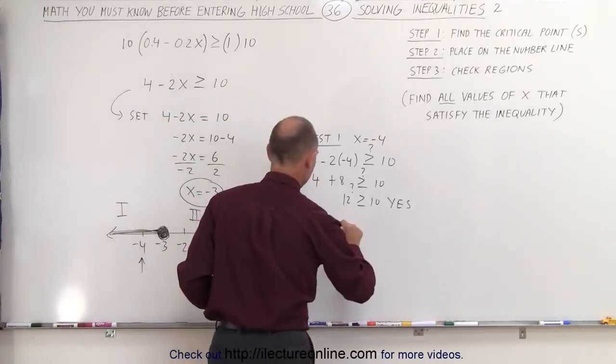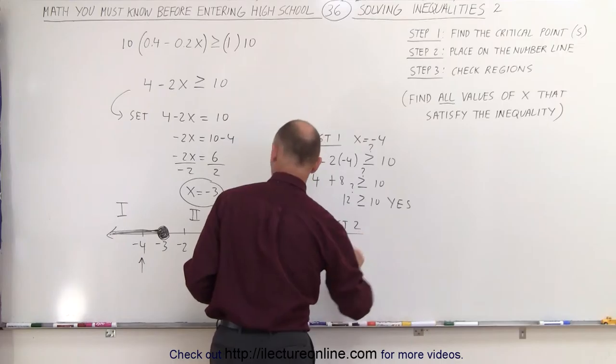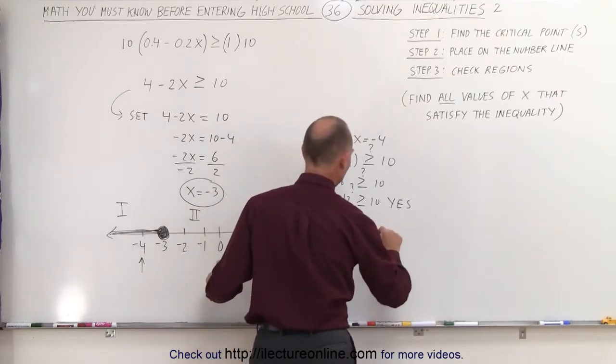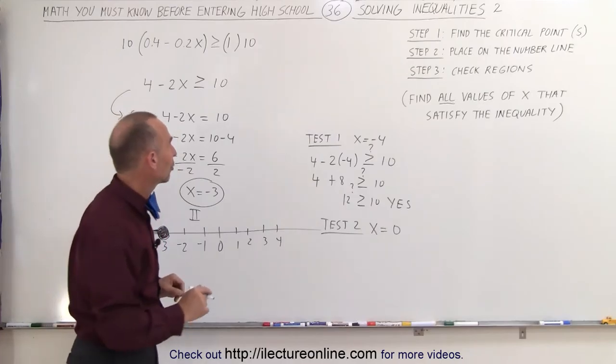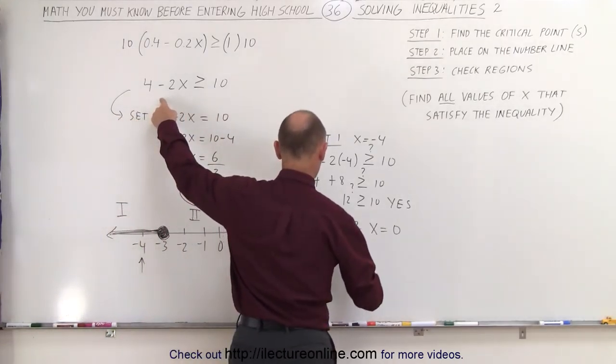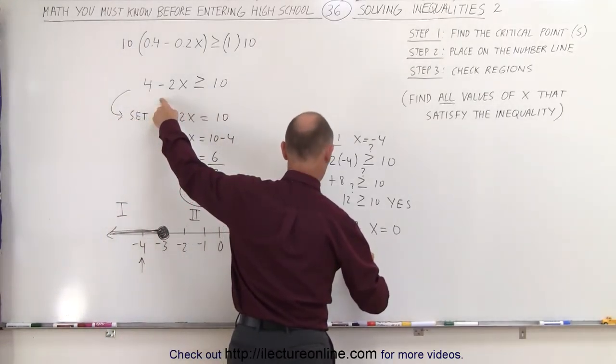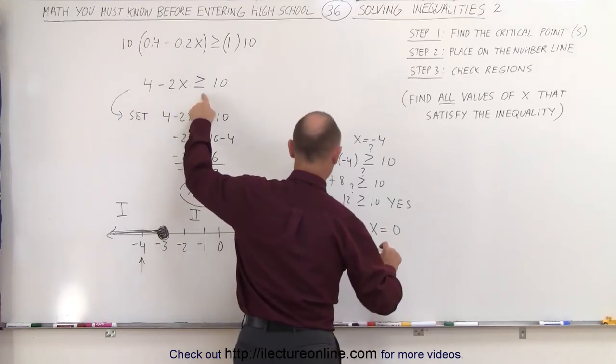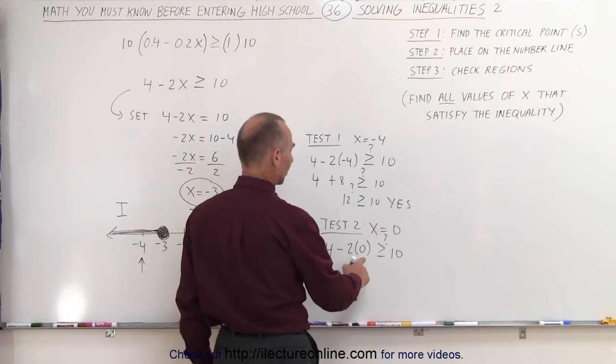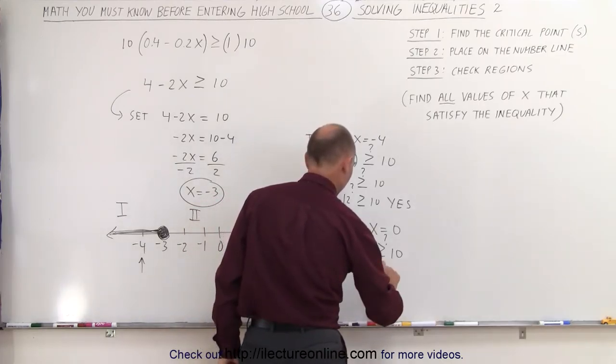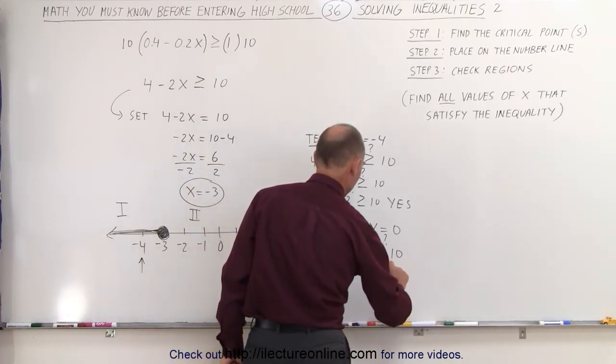We're going to do test number 2. To do that, we're going to plug in another point. I always like to pick x = 0 if I can, because that makes things easier to work with. We plug that into our inequality: 4 - 2(0) ≥ 10? Of course, 2 times 0 is 0. So we get 4 ≥ 10? And the answer is no.